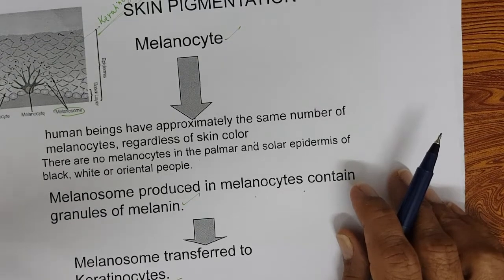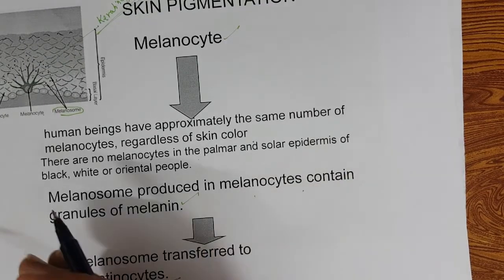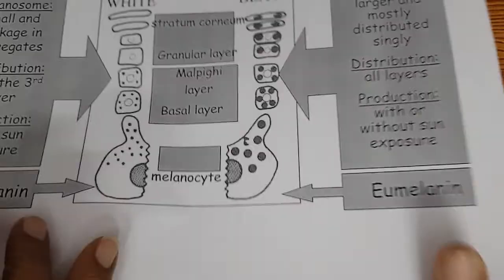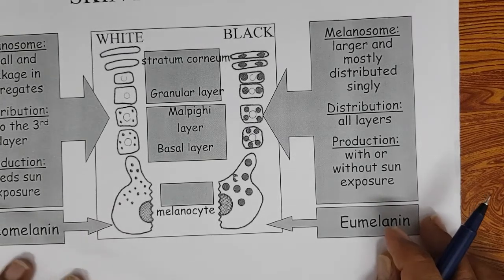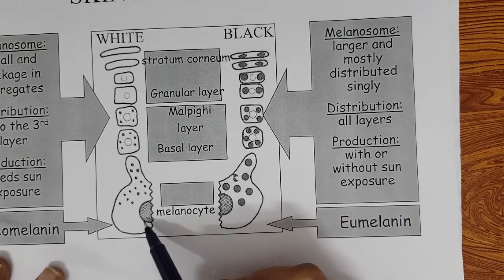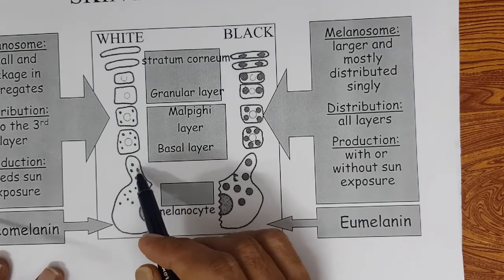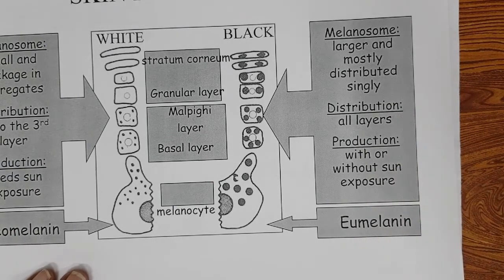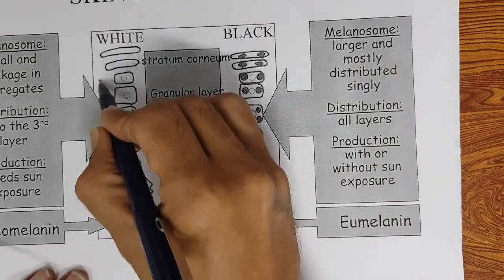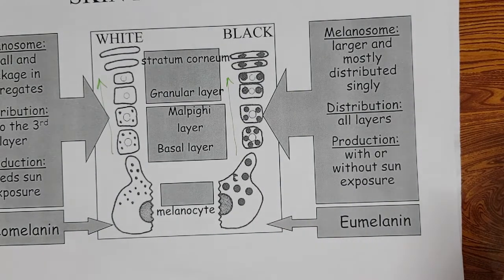Sunlight and other factors trigger the transfer of melanosomes from melanocytes to keratinocytes. I discussed this in detail in Part 7. The skin cells are dynamic — old cells come out, new cells are formed. When melanin is synthesized, there are two types of polymer: pheomelanin and eumelanin.